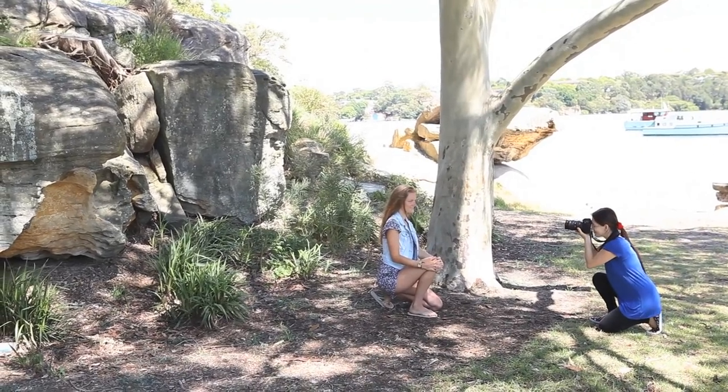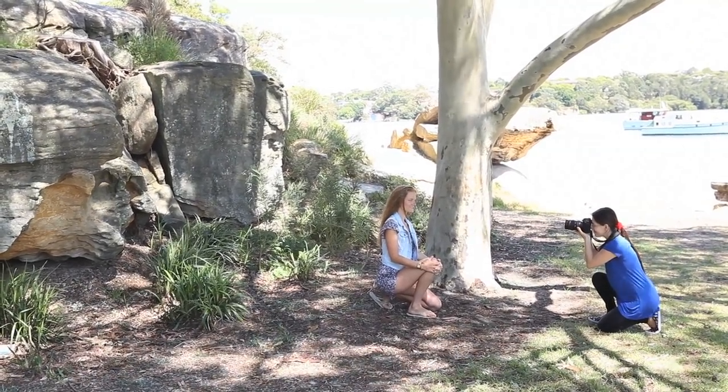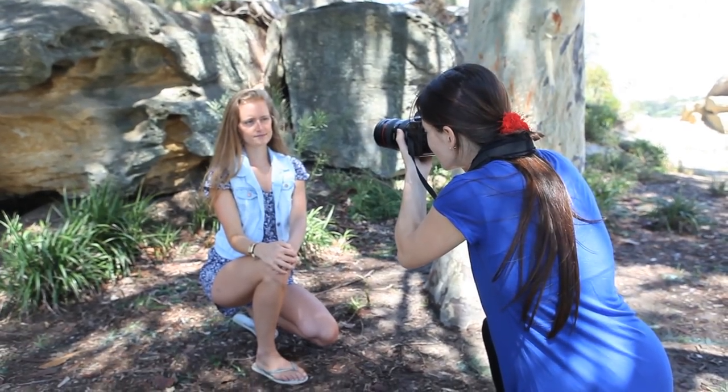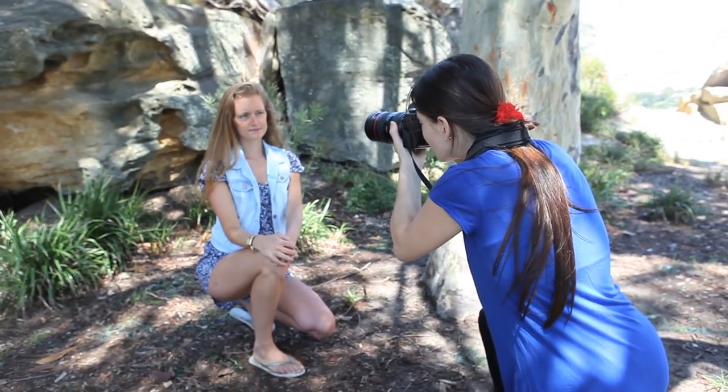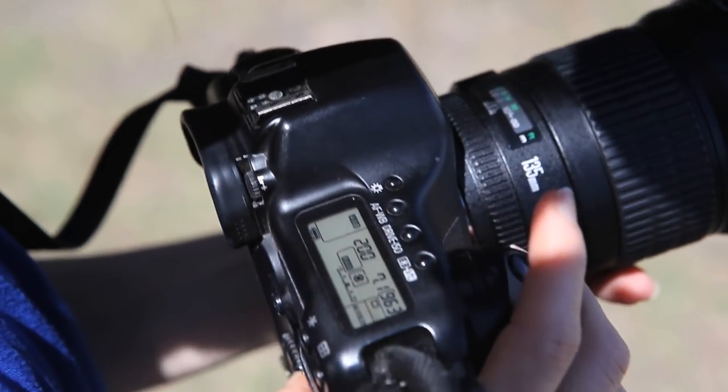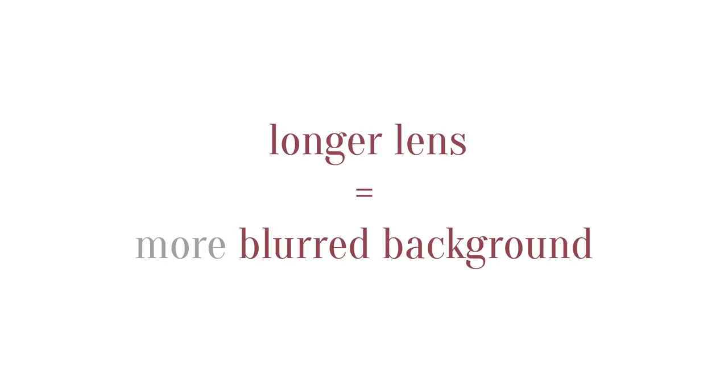Now let's look at the optical length of the lens. Our subject is about two or three meters from the rocks and the aperture is f5.6 in both shots. This first shot is at 24 millimeters — quite wide. This second shot uses a much longer lens of 70 millimeters. You can see the difference in perspective and also the increased blur with the 70 millimeter lens.